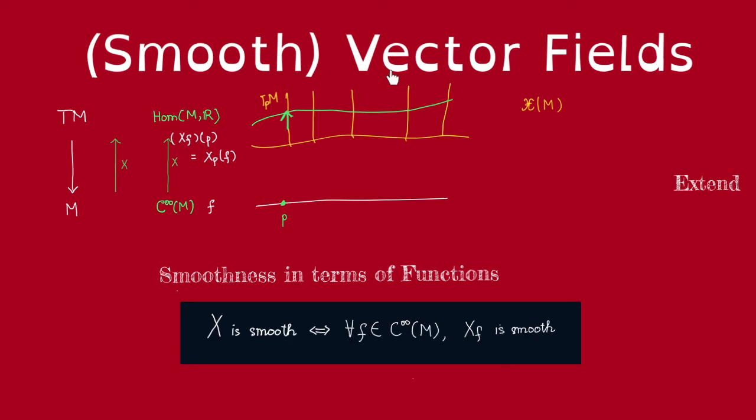Okay, so now, amongst the vector fields, we want to single out those that we will call smooth vector fields. And we'll give three different characterizations of that. Okay, so for first characterization, a vector field X is smooth if it is smooth as a map from M to TM, to the tangent bundle.